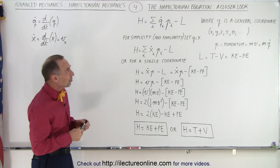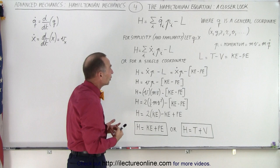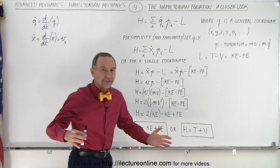The Hamiltonian equation is defined as the sum of the products of Q sub i. What's Q sub i? Q is a random or general coordinate. For example, x, y, z, r, theta, and so forth could all be considered Q.